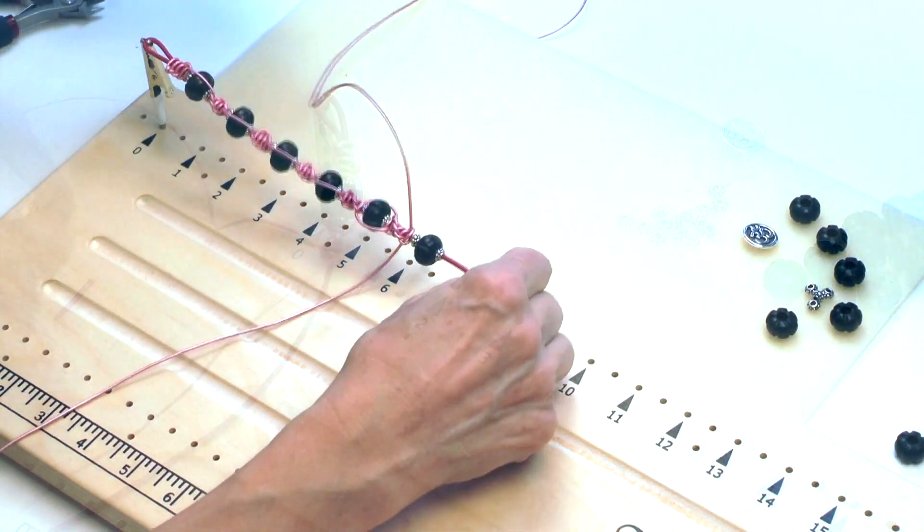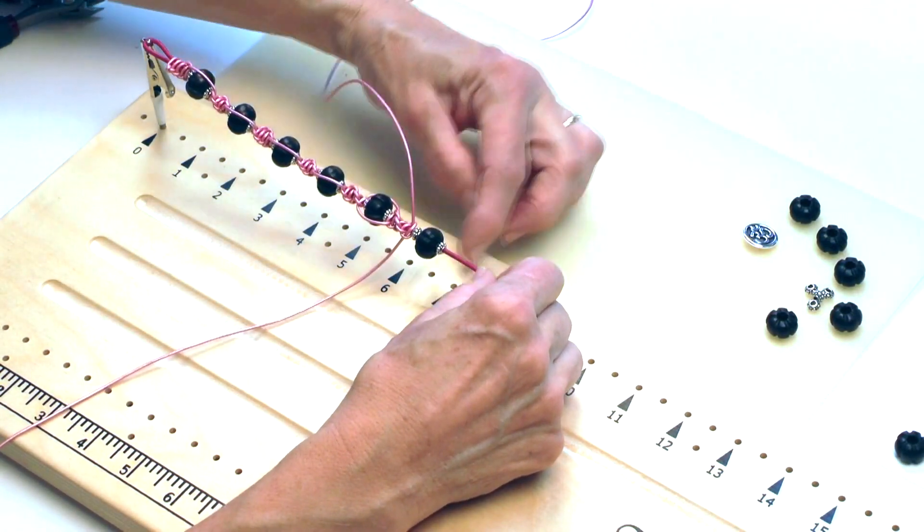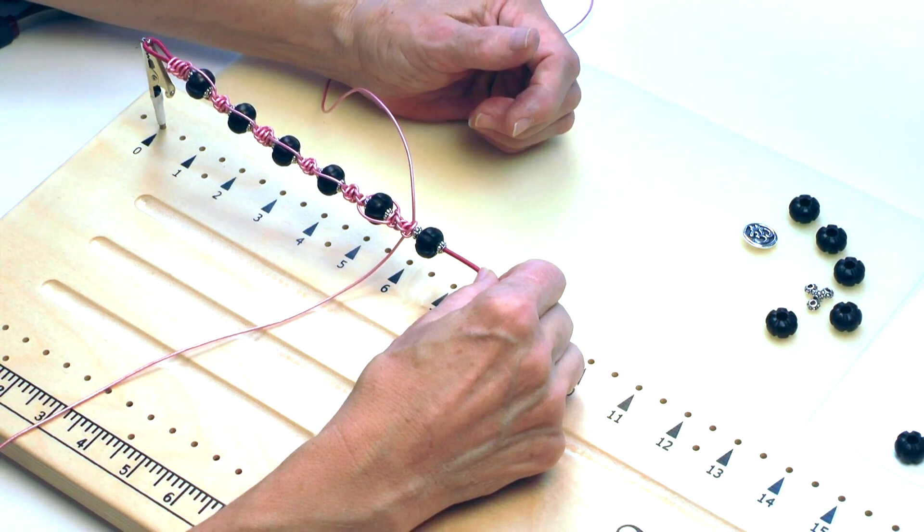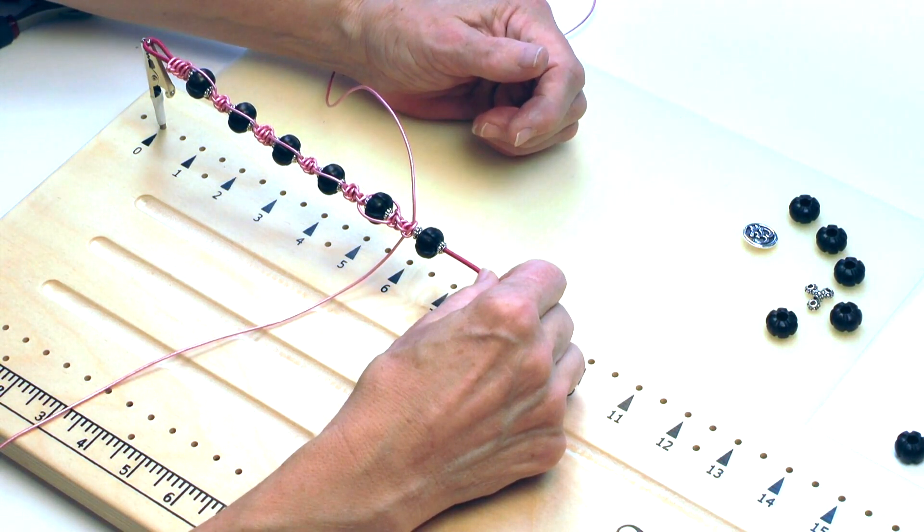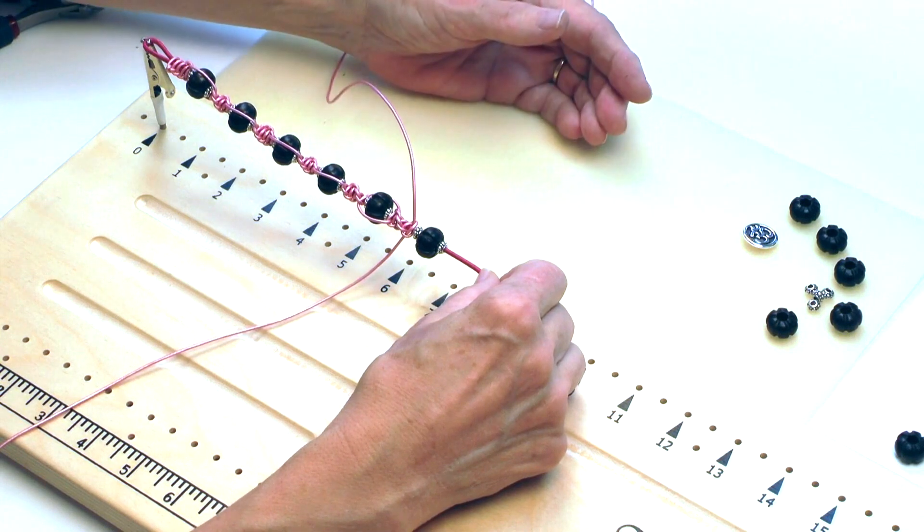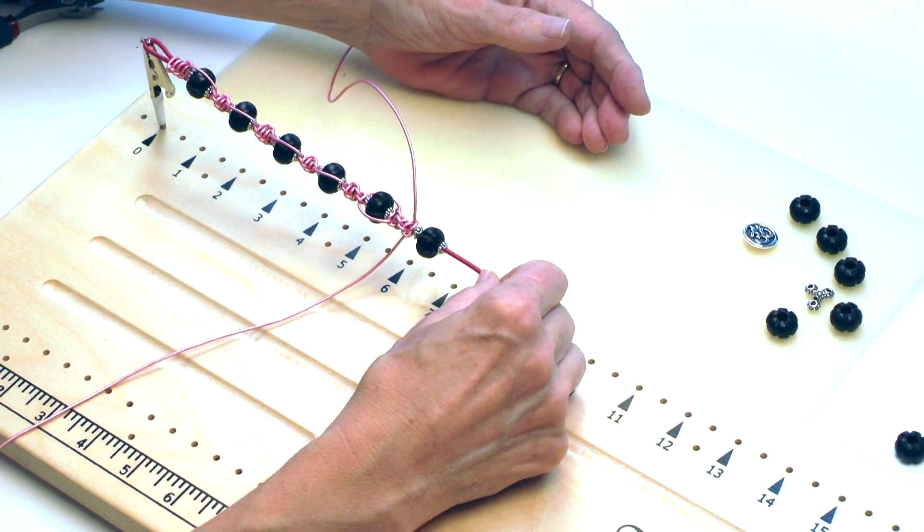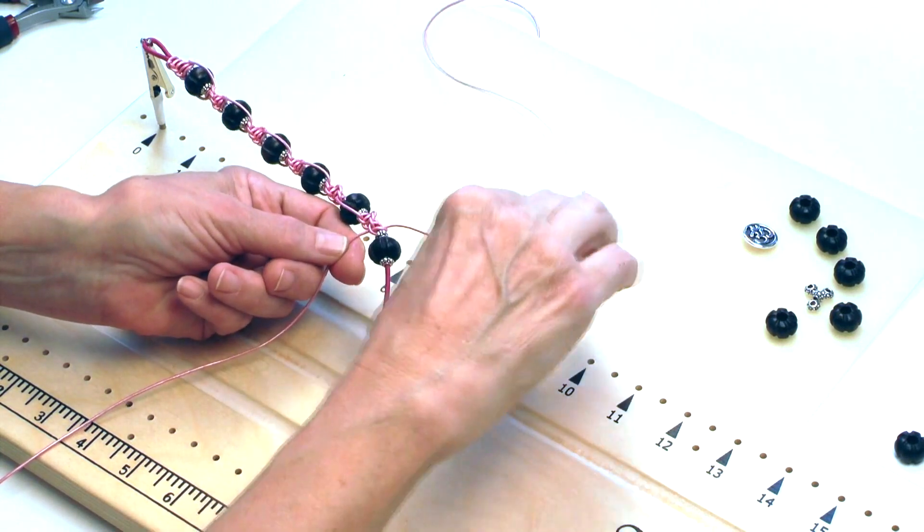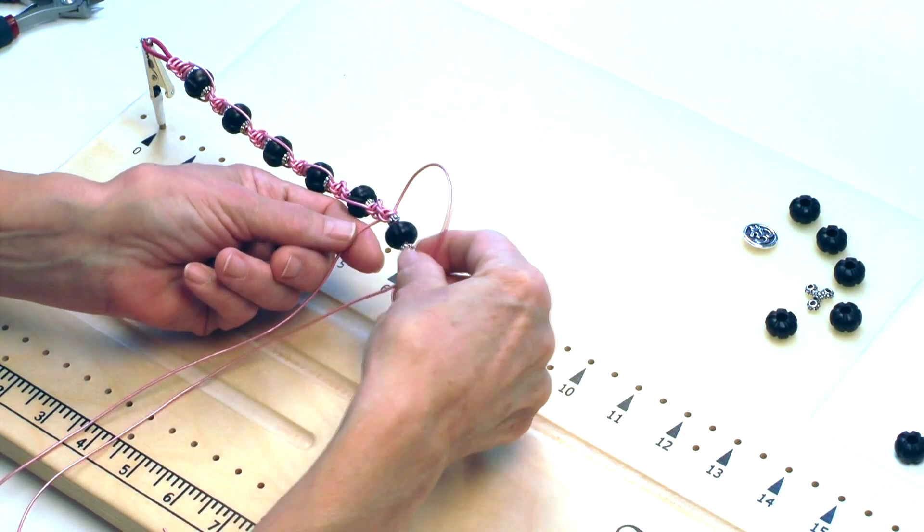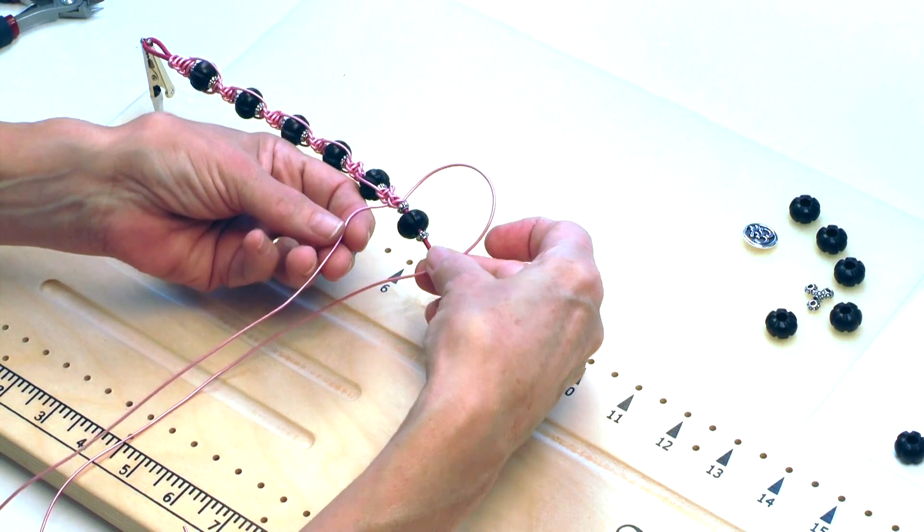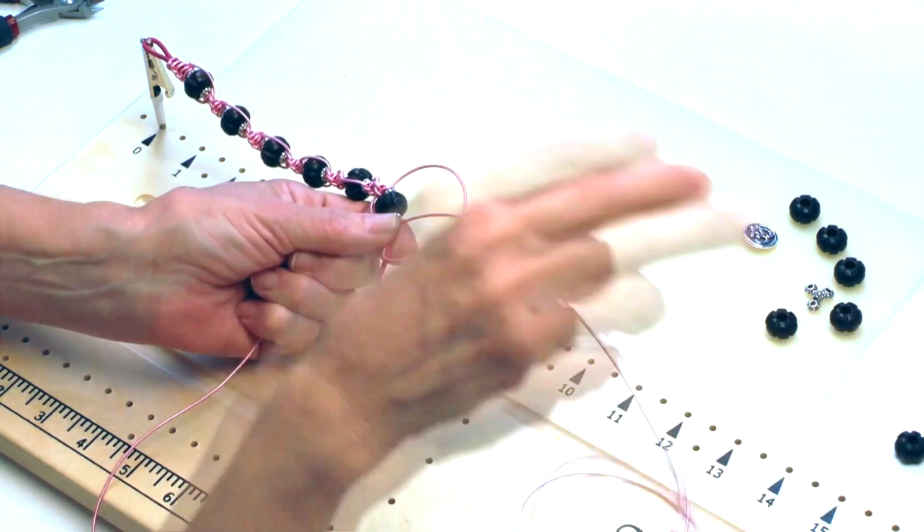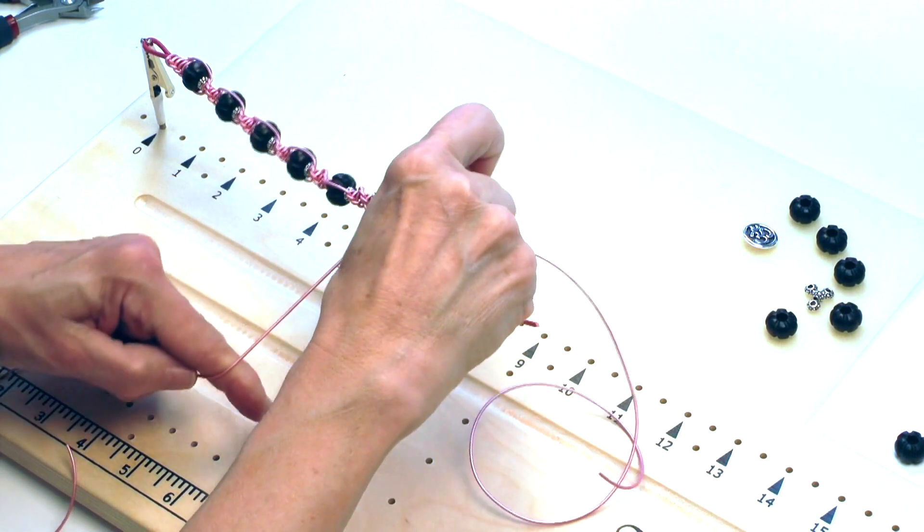Now I've finished knotting my bracelet. And I've got up to about the seven inch point. Of course, my button will add a little bit. So I think I'll just stop right here. And now I want to finish knotting and add the button. So I will go ahead and start by just bringing my cord, like I have all along, over, over, under, through, to get the beads locked in there.